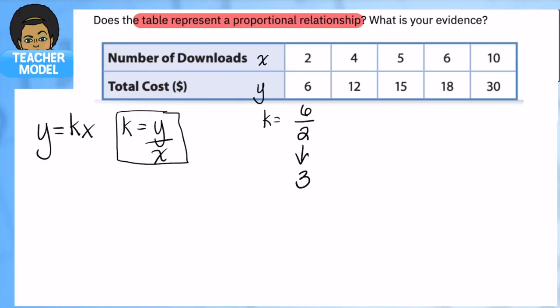We'll try the next one: y which is 12 divided by 4 gives us 3, so so far so good it's constant. We'll try the next set: 15 divided by 5 is 3, 18 divided by 6 is 3, and 30 divided by 10 is 3. So yes, k is constant.